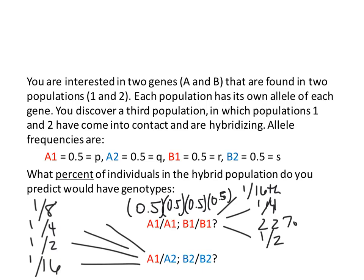So a half times a half times a half times a half — there's a half, a quarter, an eighth, a sixteenth. That's 6.25% of the population you'd expect to have that genotype. The probability of getting every one of those four alleles is the same as their allele frequencies. You just multiply them together to figure out the fraction of the population that has that specific genotype.